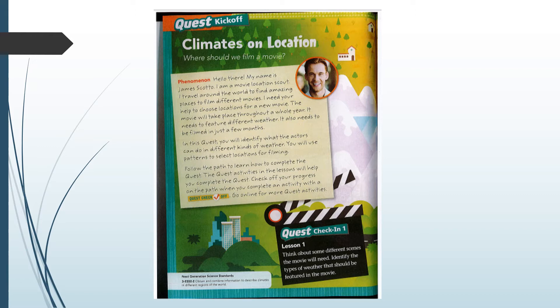Check off your progress on the path when you complete an activity with a quest checkoff. Go online for more quest activities. Down at the bottom it says quest check-in number one, lesson one: think about some different scenes the movie will need and identify the types of weather that should be featured. This is just something to get you thinking about why weather around the world is important — a great example for people that work in the movie industry.